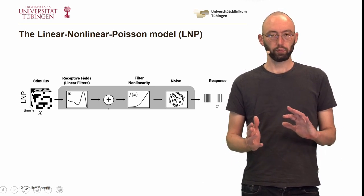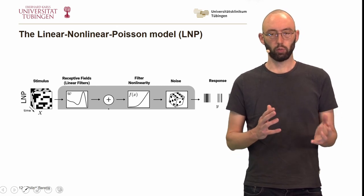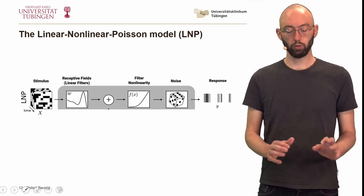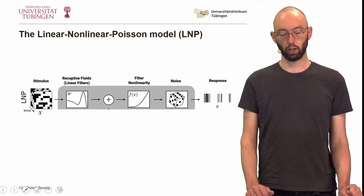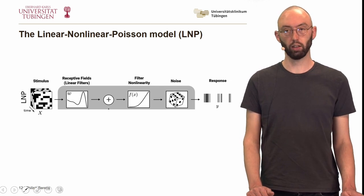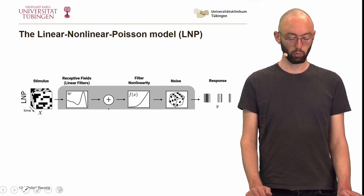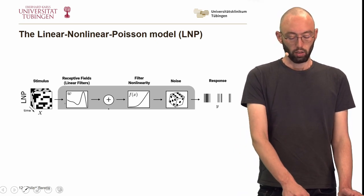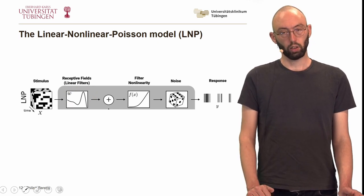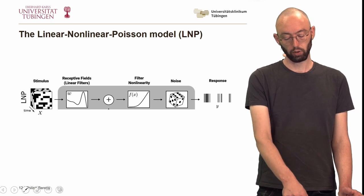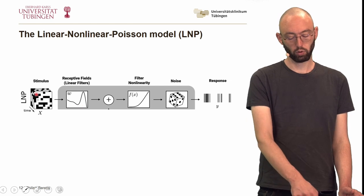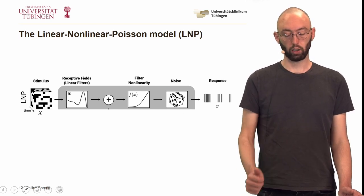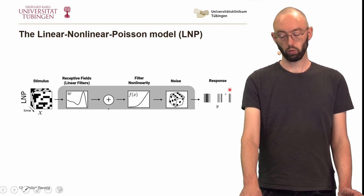Now we talked about relationships between stimuli and responses, space-time separable and non-separable receptive fields. Now we would like to go to data analysis. We often summarize this relationship as a simple predictive model — the so-called Linear-Nonlinear-Poisson model, or LNP model. In the LNP model we assume a stimulus with one or two spatial dimensions and a time dimension. The model neuron has receptive fields as linear filters; the result of applying these linear filters to the stimulus is passed through a nonlinearity, and then via a Poisson process we generate responses of the neuron.